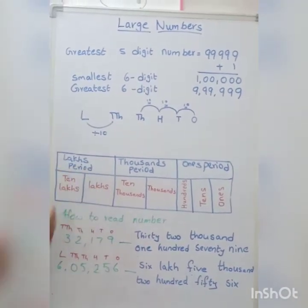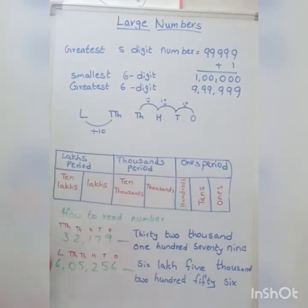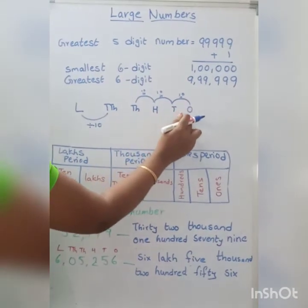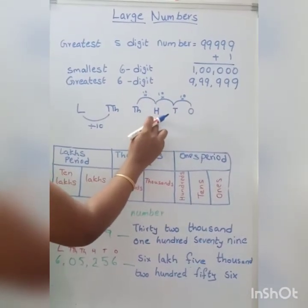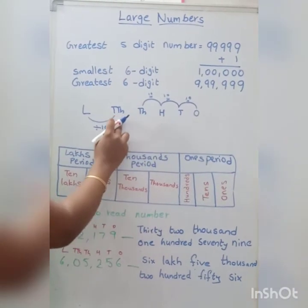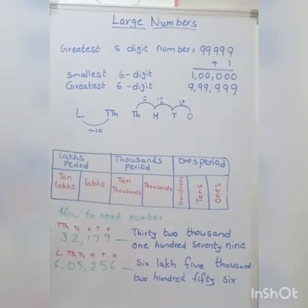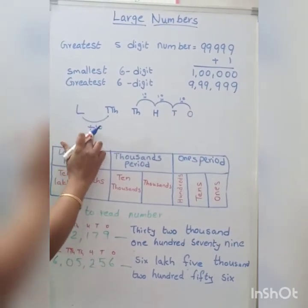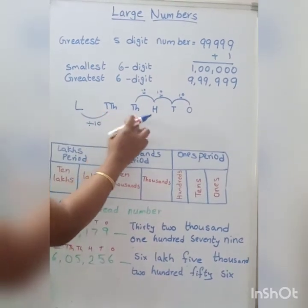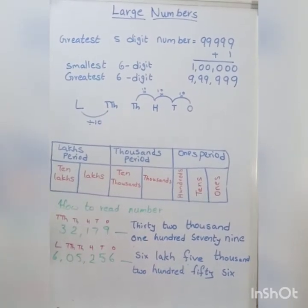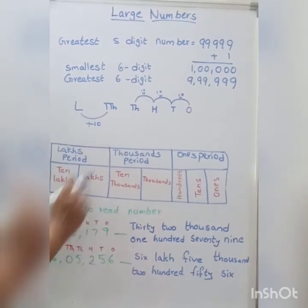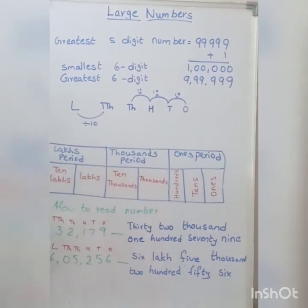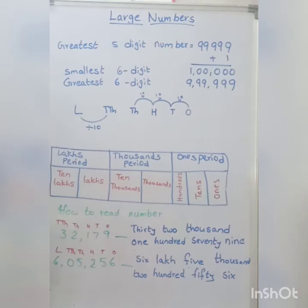The value increases when we go from right to left: 1s, then 1×10=10, 10×10=100, 100×10=1,000, 1,000×10=10,000 and so on. The value decreases when we go from left to right: 1 lakh ÷10 = 10,000, 10,000 ÷10 = 1,000, and so on. The place just to the right of the 1,000s place is 100s, and the place just to the left of the 1,000s place is 10,000s.